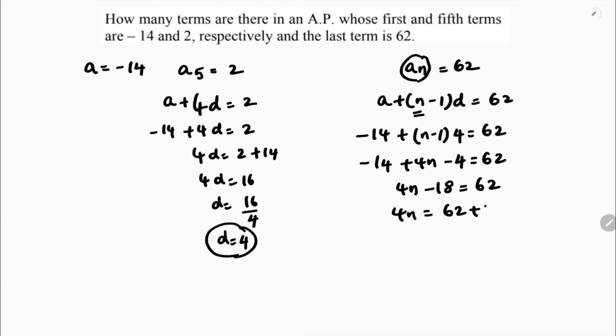4N equals 62 plus 18. 4 times N equals 62 plus 18, 80 by 4. The value of N is 20.